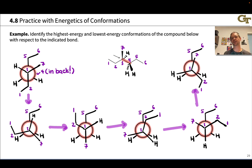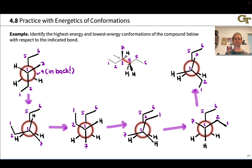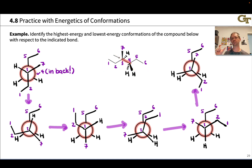Now we've laid down all the staggered and eclipsed conformations, and it's time to choose which are highest and lowest in energy. For the lowest energy conformer, we don't even need to look at the eclipsed conformers, since those are all energy maxima. The staggered conformers are the energy minima. The ethyl groups are the bulkiest groups attached to this bond of interest, so the lowest energy conformation should put those ethyl groups as far apart from each other as possible — they should be in an anti-orientation in the most stable conformer.